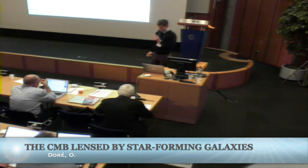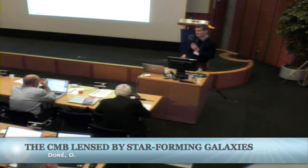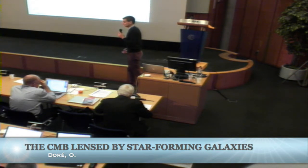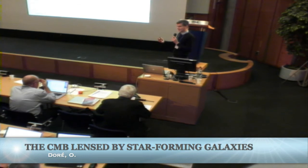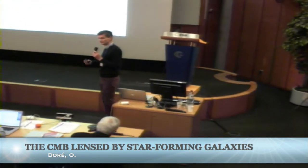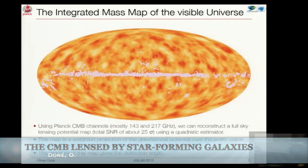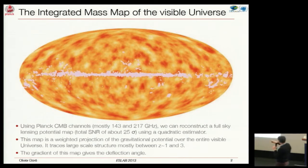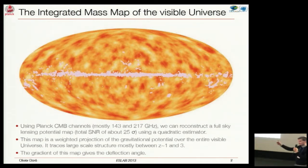As we just heard from Karim, a great thing Planck can do is provide a full-sky projected map of the visible universe using a quadratic estimator applied to the CMB channels—143 and 270 GHz. We can produce this map, which is really a map of the large-scale structure with sensitivity between redshift one and redshift three. The gradient of this map gives you the deflection angle, which is a remapping between the initial direction and the one we observe.